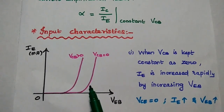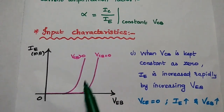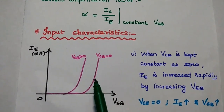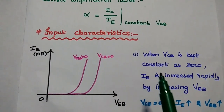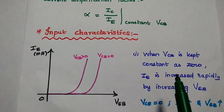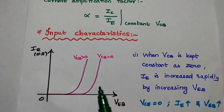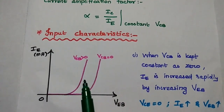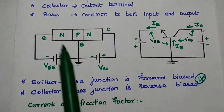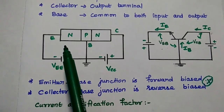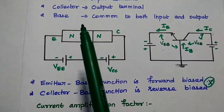If forward bias is increased, the current flowing through the transistor on the input side is also increased. At the same time, when the output voltage is increased — that is due to the reverse bias condition — the width of the base is decreased. This means the input characteristics curve shifts towards the left side. When forward bias is increased, the input voltage VEB increases, in turn increasing the emitter current rapidly with condition VCB equal to zero.